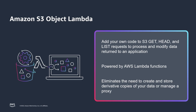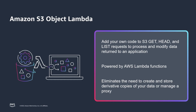S3 Object Lambda uses AWS Lambda functions to automatically process the output of S3 GET, HEAD, and LIST requests. You can use new or existing AWS Lambda functions to modify the data returned to S3 GET requests to convert data formats — for example, XML to JSON or JPEG to WebP — dynamically resize images, redact confidential data, and much more.